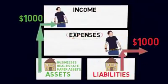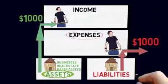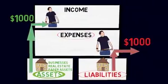The poor only have expenses, the rich buy assets, and the middle class buy liabilities that they think are assets.